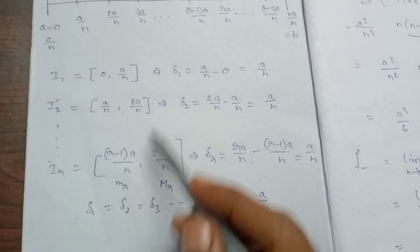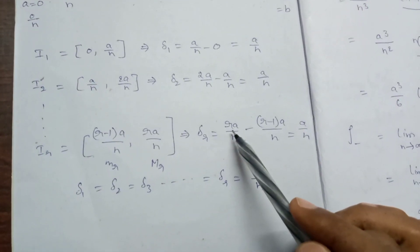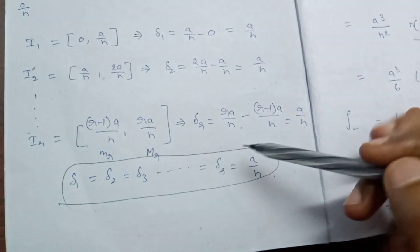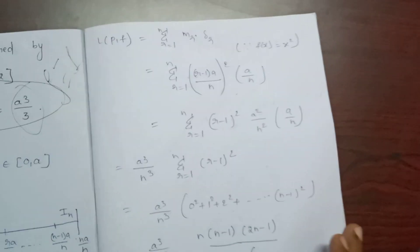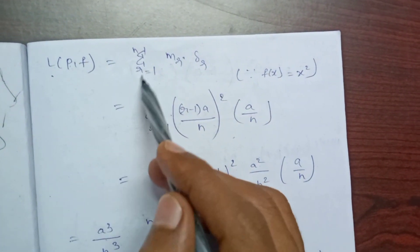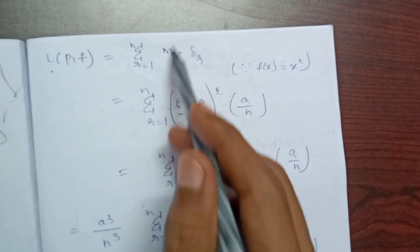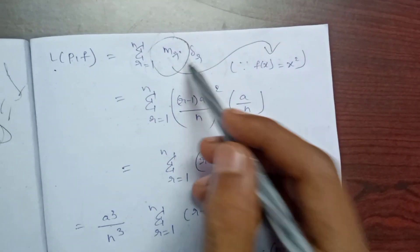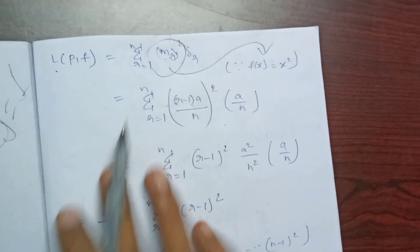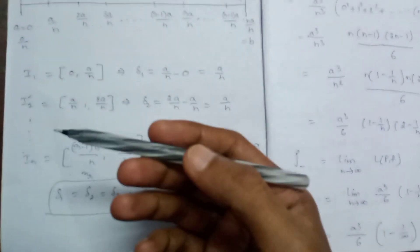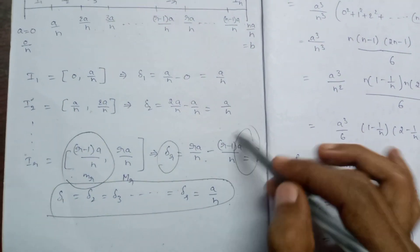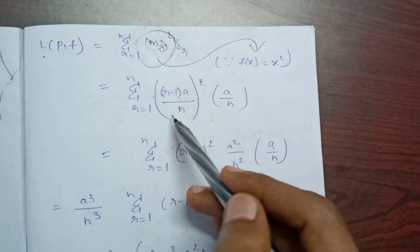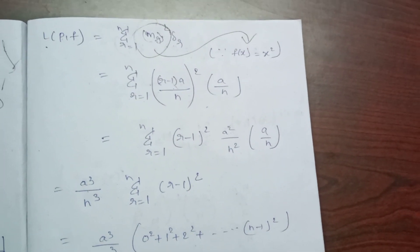The general subinterval Iᵣ is the closed interval [(r−1)a/n, ra/n], so Δᵣ = a/n. Since f(x) = x², the lower bound value mᵣ is the minimum on Iᵣ, which occurs at the left endpoint: mᵣ = ((r−1)a/n)². Therefore, the r-th term of the lower sum is mᵣ·Δᵣ = ((r−1)a/n)² × (a/n).